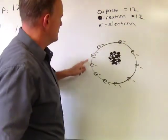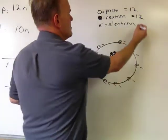and we have 1, 2, 3, 4, 5, 6, 7, 8, 9, 10 electrons.